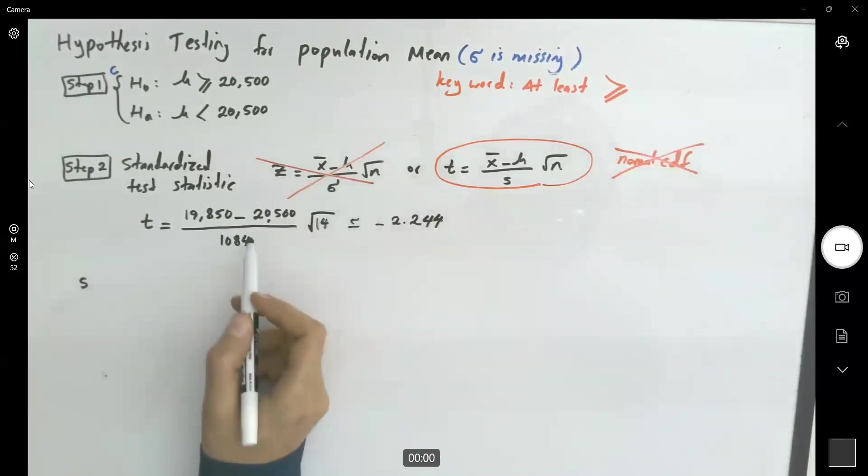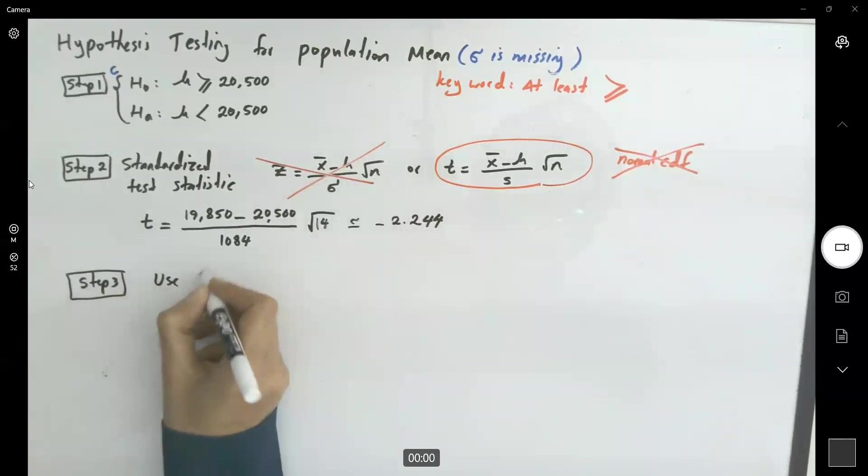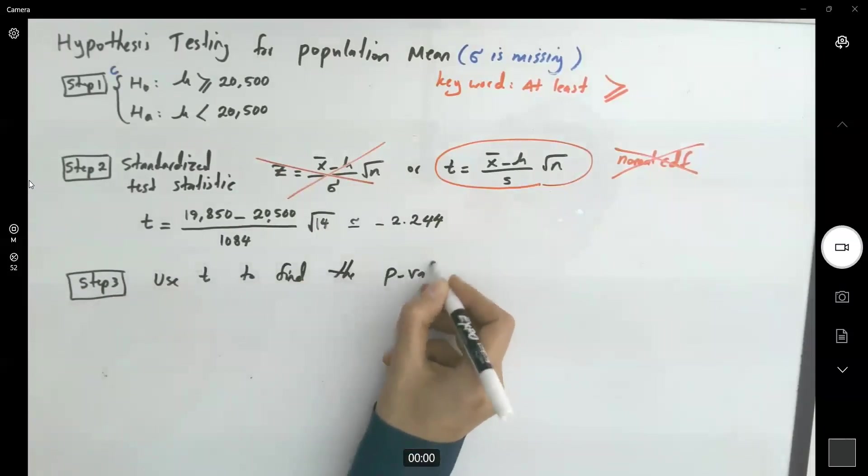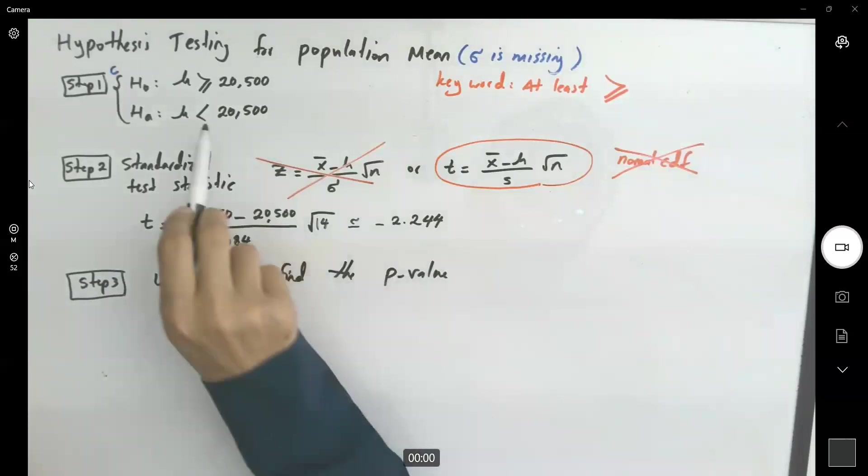If you do the calculation, your t is approximately negative 2.244. We are using t to find a p-value. Step 3, use t to find a p-value. What's the p-value? That area to the left-hand side of your t.